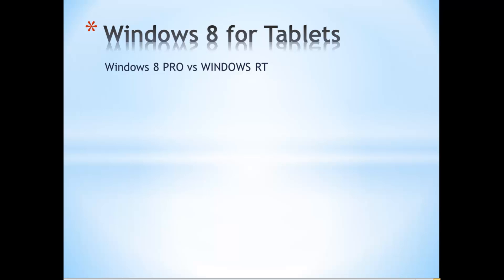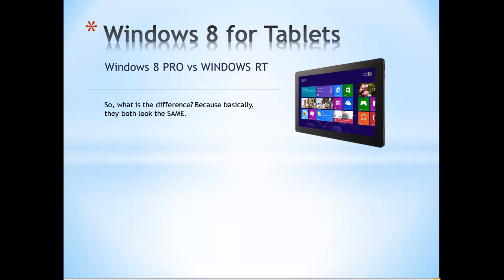There are two kinds of tablets available for Windows 8 systems. One is called the Windows 8 Pro tablet and the other is called the Windows RT tablet. There's a huge difference between the two even though they look exactly alike — they both have the Metro interface with live tiles, and if you were out at Best Buy looking at one or the other you may think they're the same.